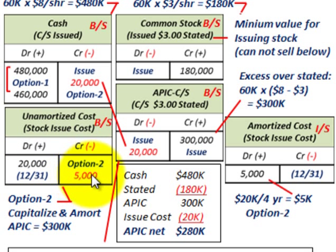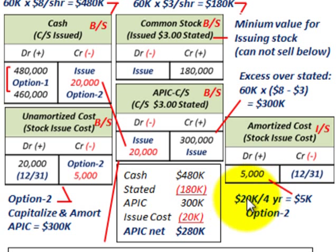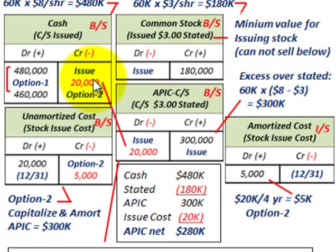For the end-of-year adjusting entry under option two, we credit unamortized costs by $5,000 and debit amortized costs as an expense on the income statement for $5,000. That $5,000 is simply the $20,000 issue costs divided over four years straight-line, or $5,000 per year. To recap: in option one we reduce additional paid-in capital by the issue costs and reduce cash; in option two we reduce cash from initial receipt and capitalize the issue costs, then amortize them.